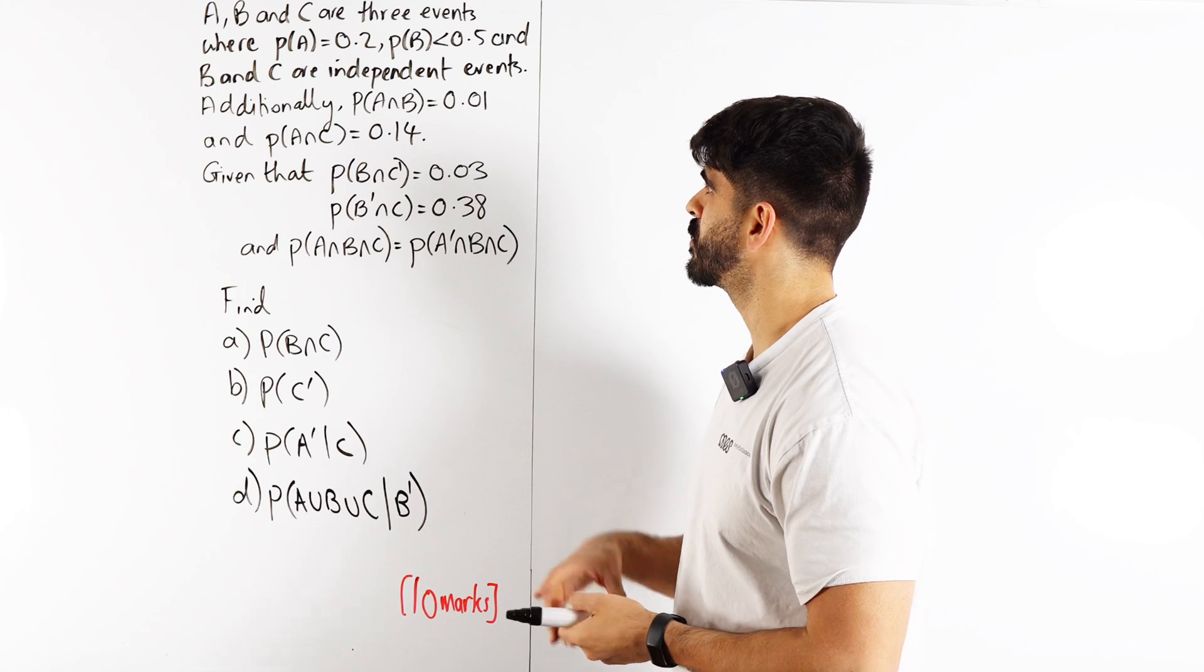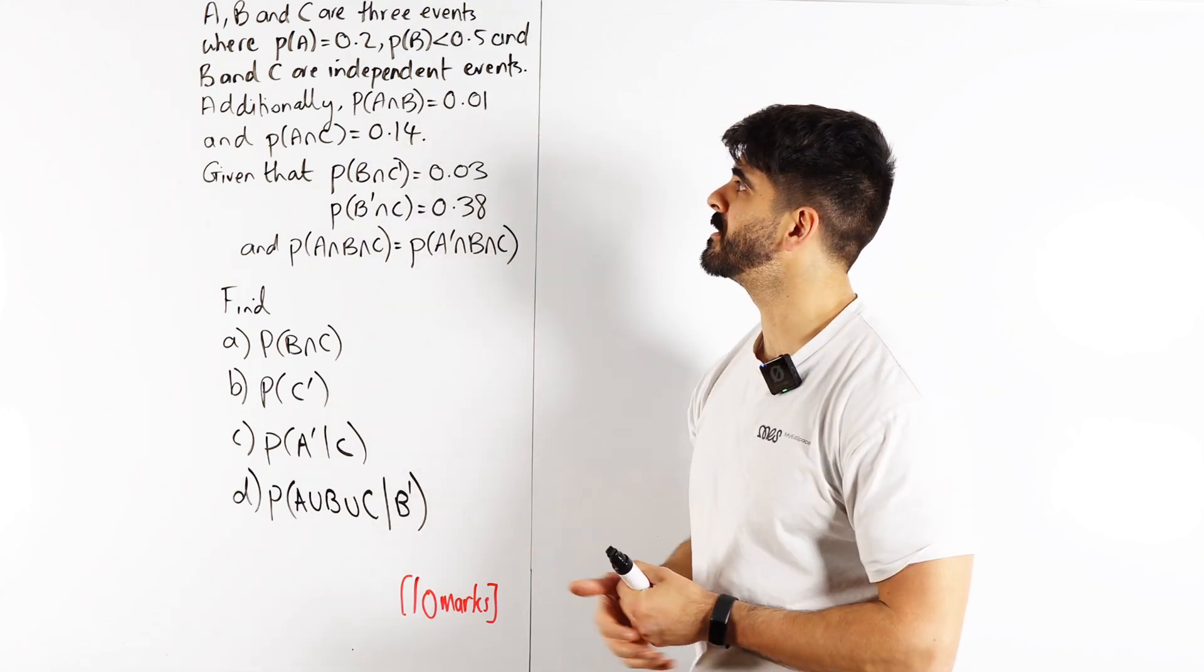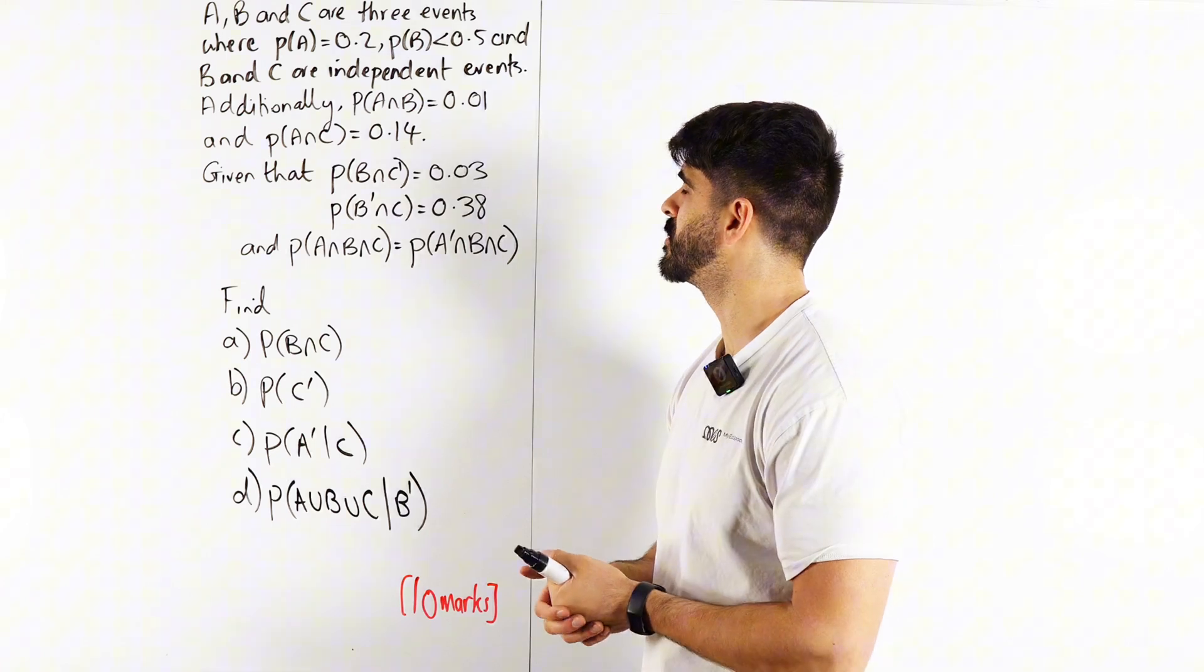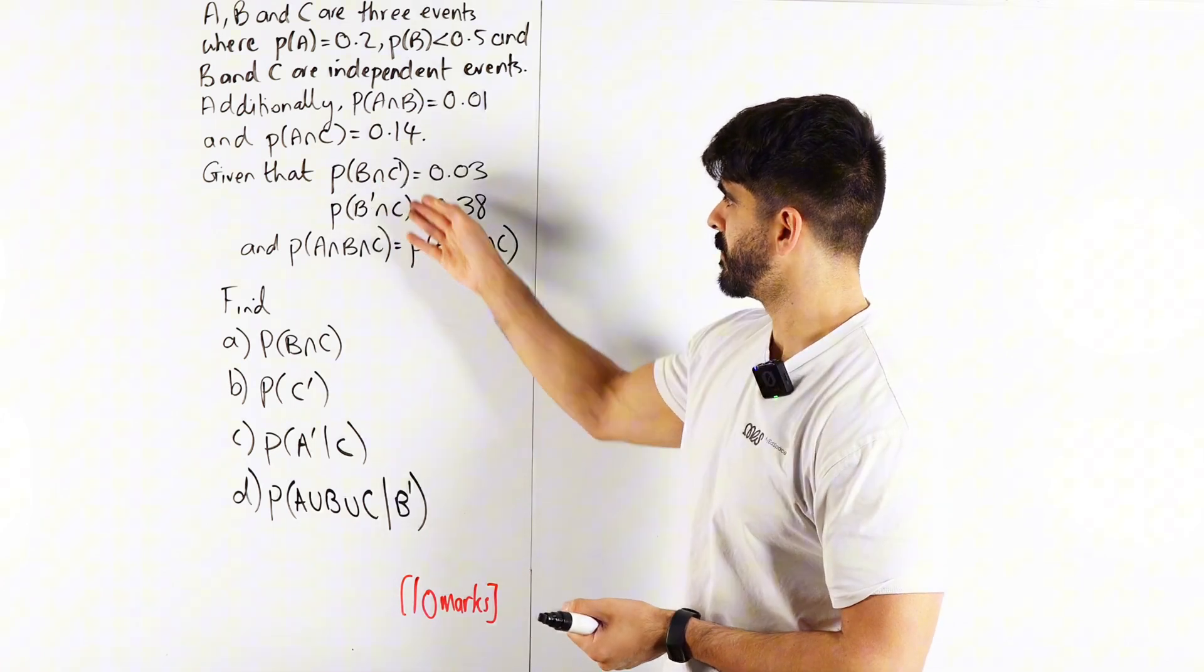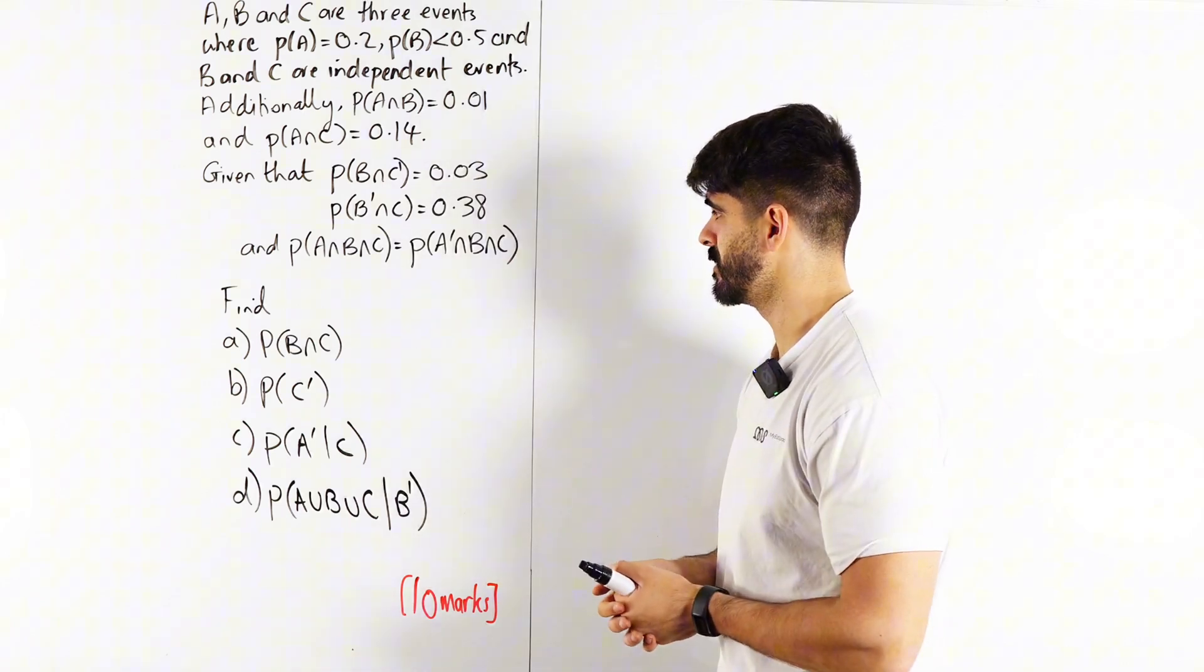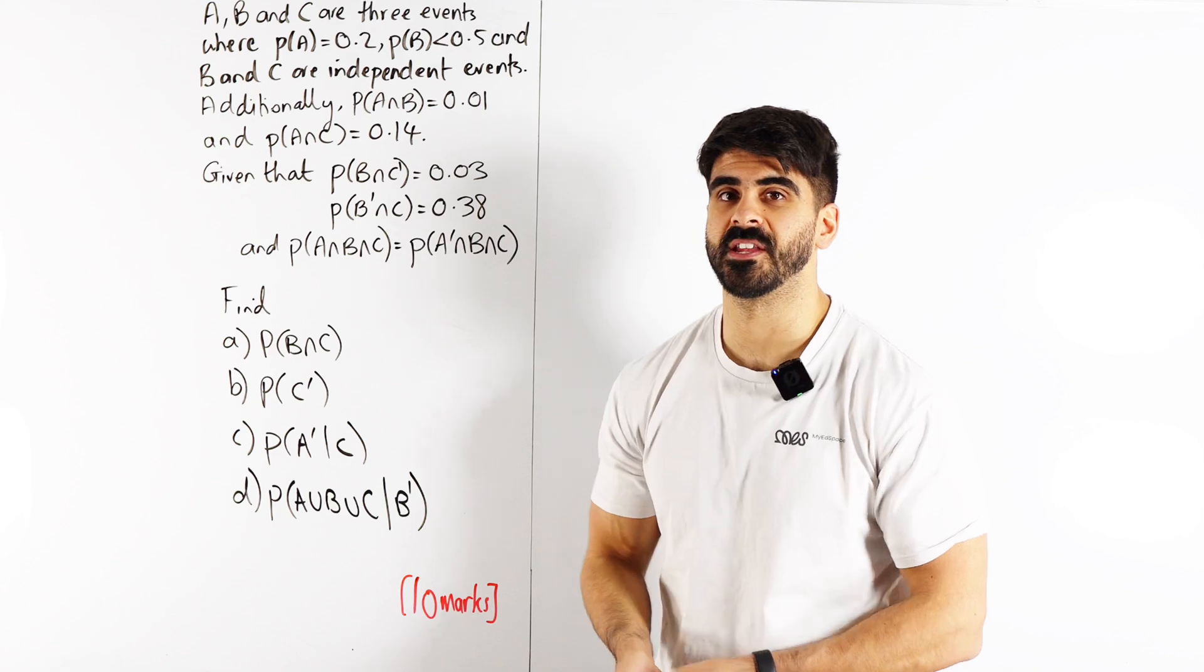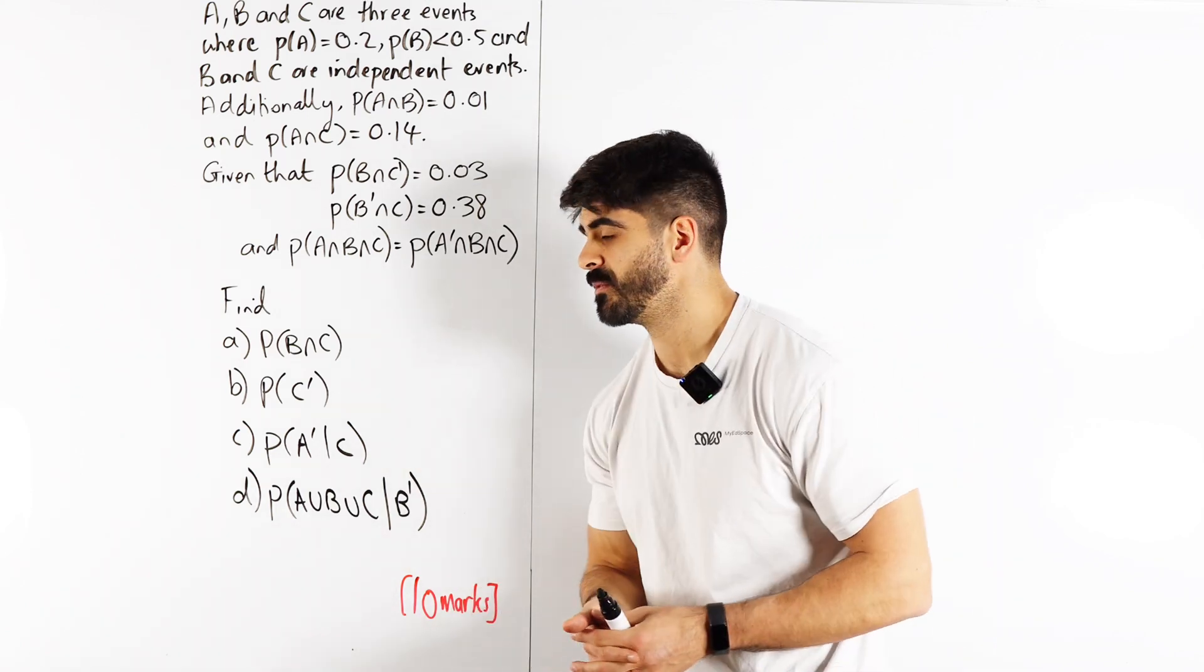When a question for Venn diagrams is full of words and P's and N's and U's, it's going to be a tough one. A, B and C are three events where P(A) = 0.2, P(B) < 0.5, and B and C are independent events. Additionally, P(A∩B) = 0.01 and P(A∩C) = 0.14. Given that P(B∩C') = 0.03 and P(B'∩C) = 0.38, find all these probabilities. Maybe you want to pause this video, see if you get the correct answer or see if it matches with my reasoning.